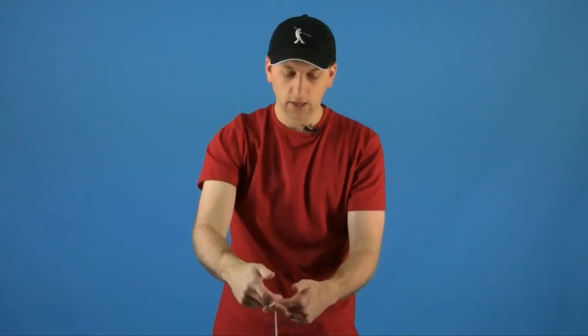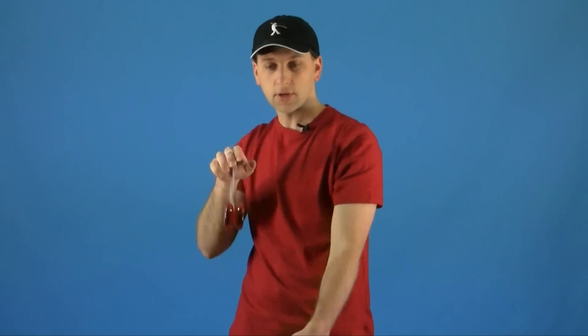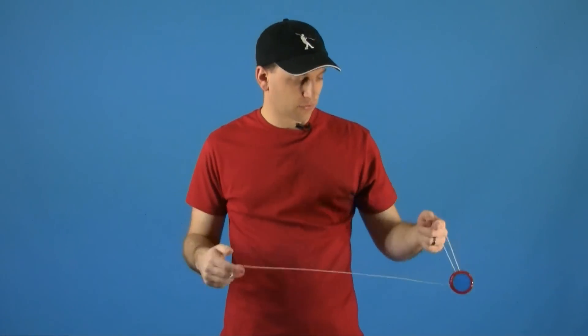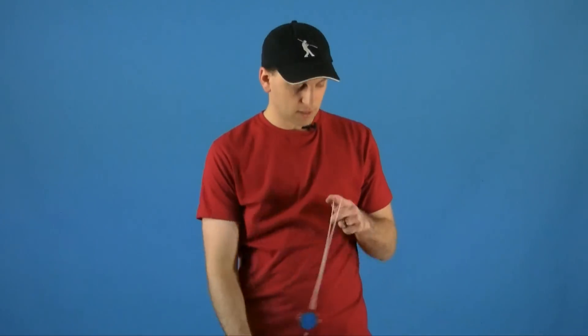Often times the front mount is referred to by the name of the first trick that you learn, which is called the brain scrambler, and the side mount is often referred to as the man on the flying trapeze, so those names are often used interchangeably.